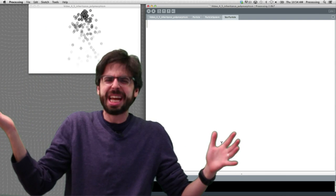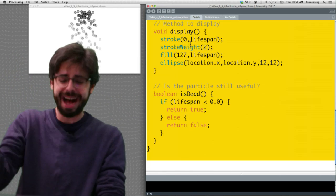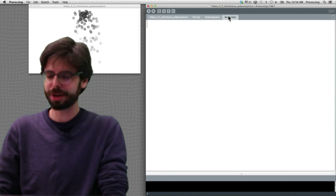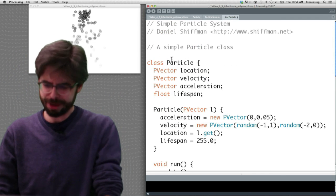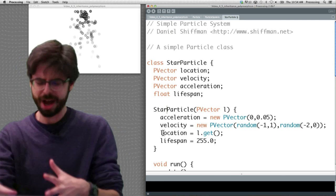My star particle, it's really basically the same thing as my particle. So let me go over here to my particle tab and I'm just going to select all and hit copy. Then I'm going to go over here to star particle and hit paste. And I'm going to rename this star particle and then start modifying this code.